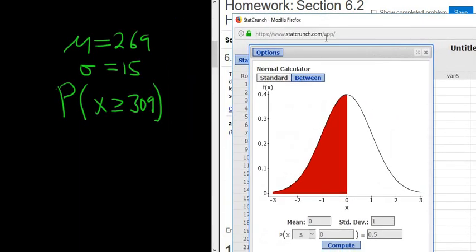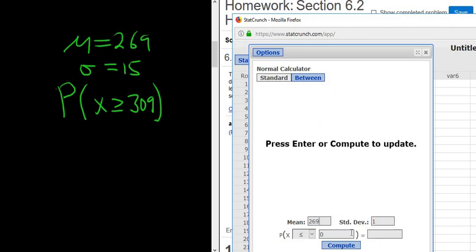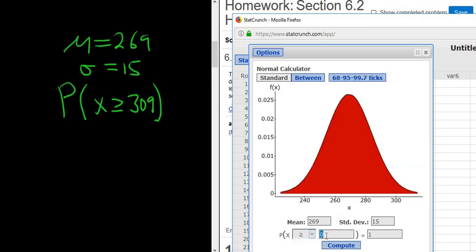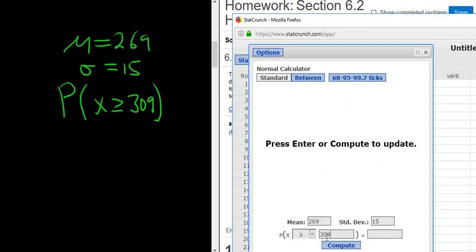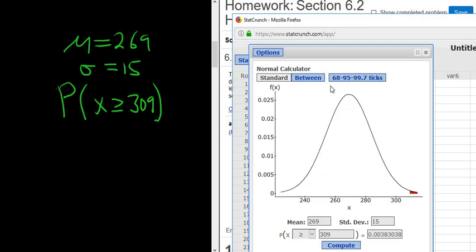Alright. Then we enter the mean. The mean is 269. Standard deviation is 15. And 309 or longer, so greater than or equal to 309. Click Compute, and there's the answer.